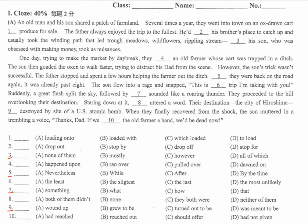We have to start from Heed. Heed stopped by his brother's place to catch up, and usually took the winding paths that led through meadows, wild flowers, rippling streams. 这边through拼錯字了。OK，答案是 all of which。